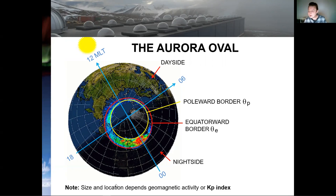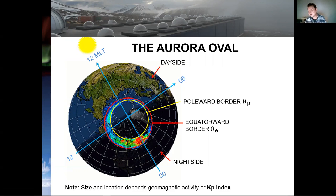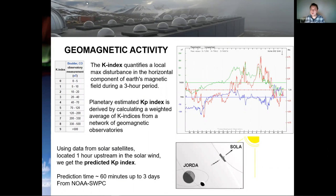The size and location of this aurora oval is highly dependent on solar wind conditions, and there is a one-to-one correspondence between solar wind conditions and how disturbed the magnetic field is on Earth. We measure this geomagnetic activity as a function of Kp index. Let's have a closer look at geomagnetic activity.